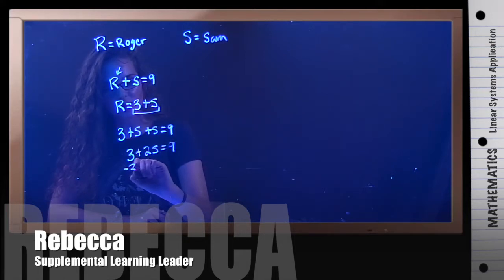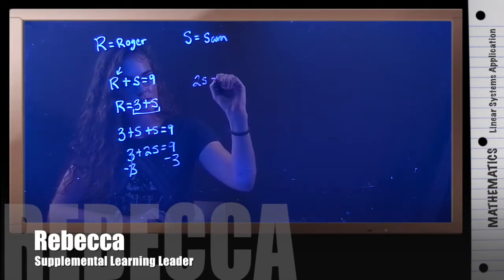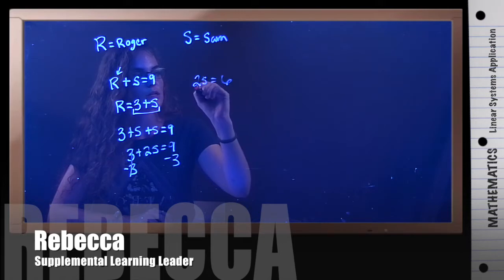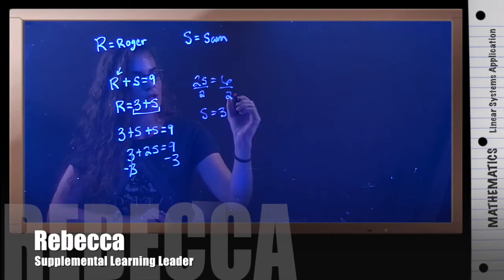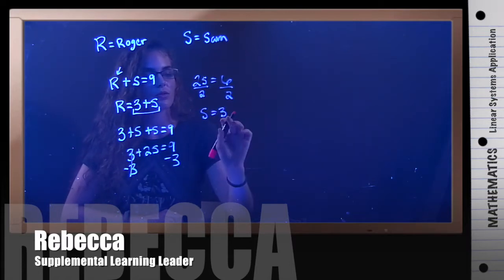You can subtract 3 from both sides. You get 2S equals 6. Then you divide by 2. And S equals 3. So that means it took Sam 3 hours.